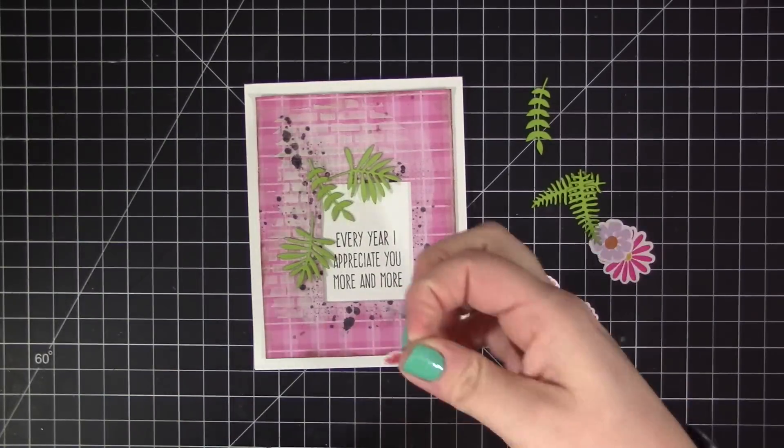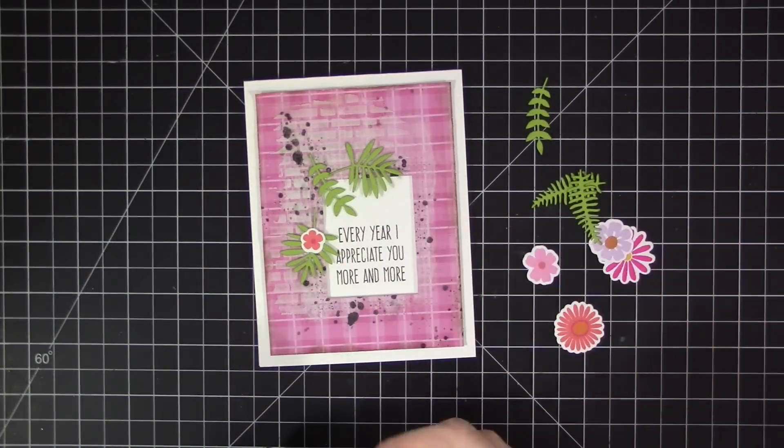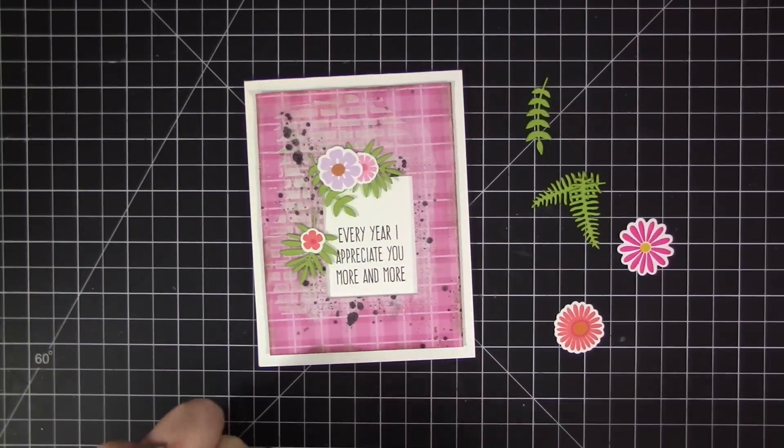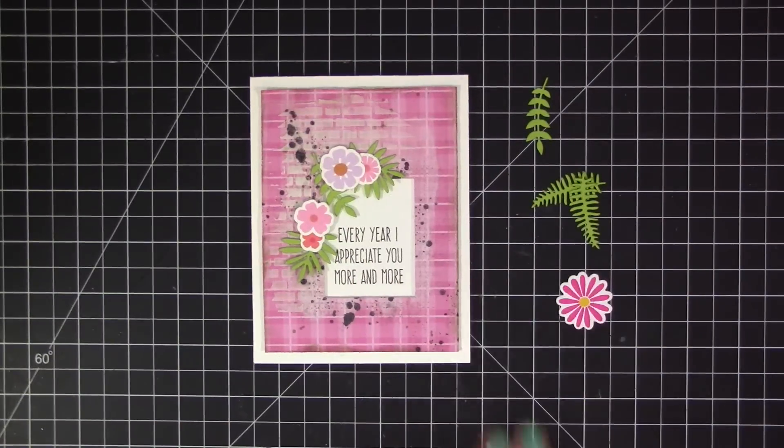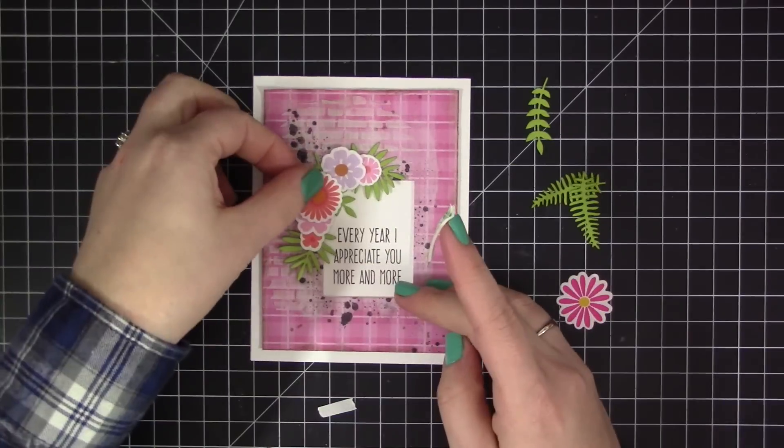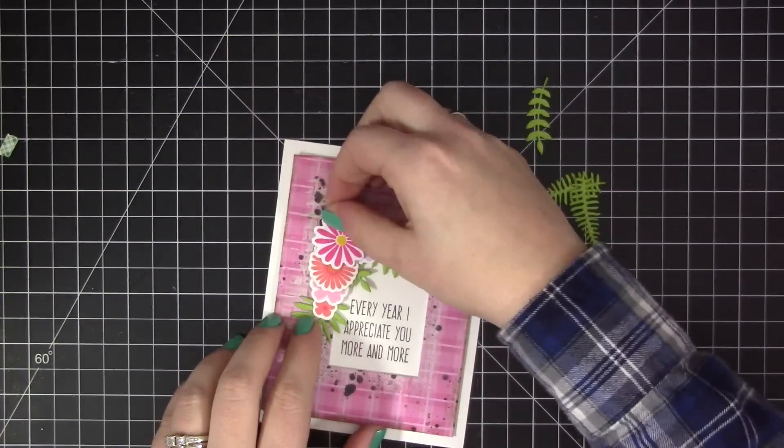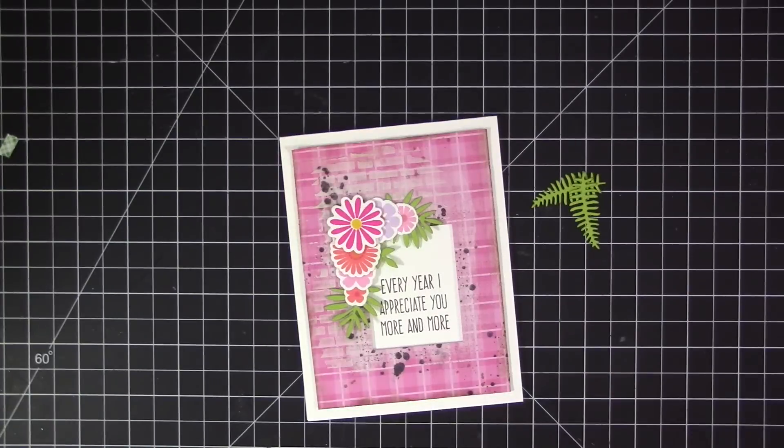Now that that's adhered on, I'm going to add the flower detail. I already have these leaves and flowers die-cut and stamped—they are from the Wild Greenery Dynamics, all the leaves, and then the flowers are from the Desert Bouquet stamp set, which now has coordinating dies.